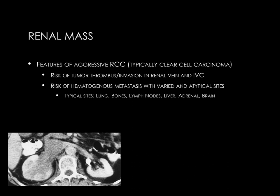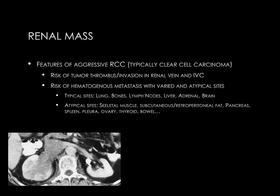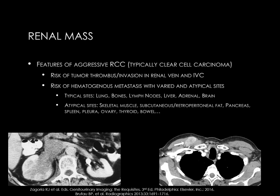Multiple atypical metastatic sites can be seen, such as skeletal muscle, subcutaneous or retroperitoneal fat, pancreas, spleen, pleura, ovary, thyroid, and bowel — the list goes on. The image on the slide demonstrates an enhancing mass of the right pectoralis muscle, which was a metastasis from a clear cell RCC.